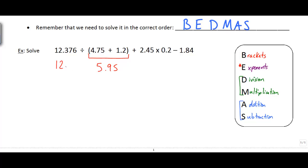I'm just going to do that one step at a time and fill in the rest of what I've got to do here: plus 2.45 times 0.2 minus 1.84. Then I'm going to go through and again identify which steps I can do next.